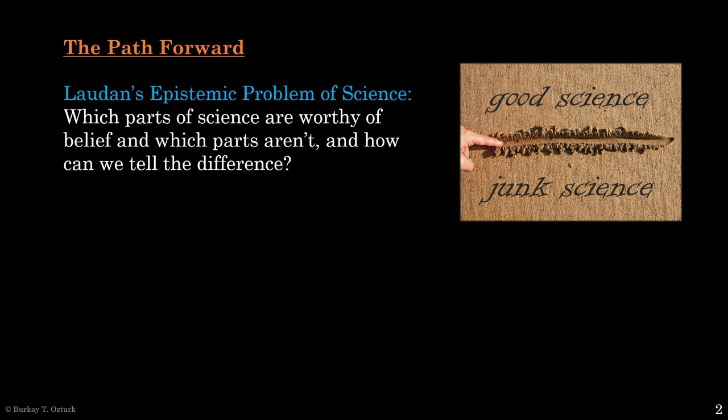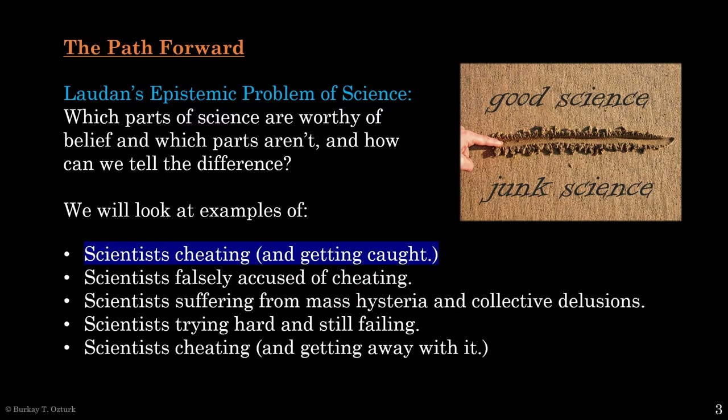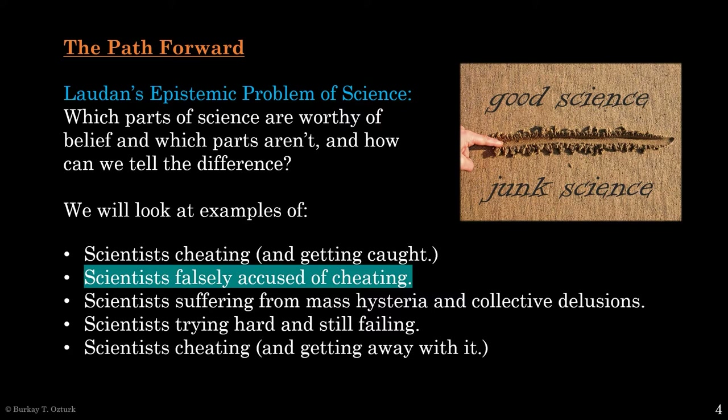The Millikan experiment and the integrity of data. Previously, we said we are dropping the demarcation problem and now trying to draw a line within science, estimating the meaningful line between good and junk science. To do that, we said we will look at specific cases. We have already discussed four cases of scientists cheating and getting caught, but they didn't tell us exactly what the difference between good science and junk science is. Today, we will examine a case involving a scientist who was accused of cheating — at least part of the accusations seem false. Perhaps the case will help us solve Lawden's epistemic problem.